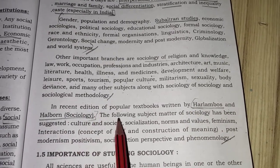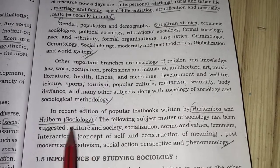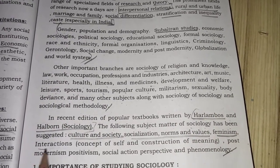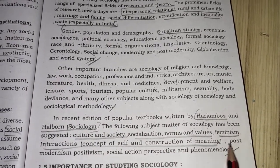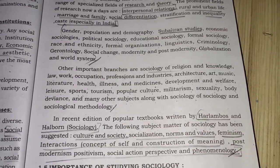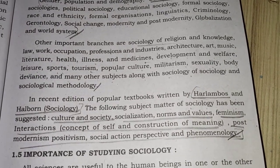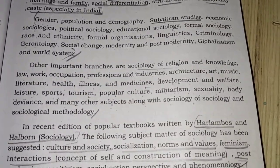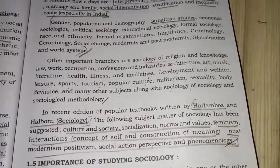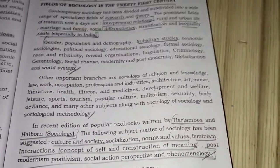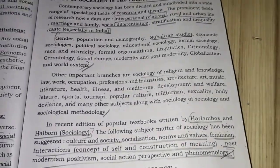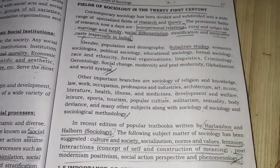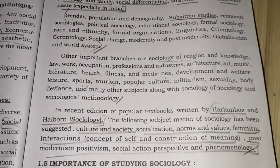In a recent edition of a popular textbook by R. Lambos and R. Bone titled 'Sociology,' the following subject matter has been suggested: culture and society, socialization, norms and values, feminism, interaction, concept of self and construction of meaning, post-modernism, positivism, social action perspective, and phenomenology. Sociology is a growing social science — society is vast, like an iceberg, and we will see the important starting points of sociology in the next class.